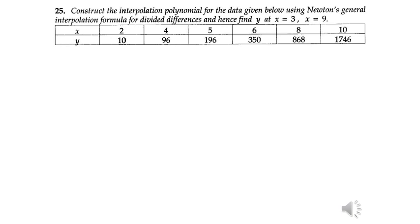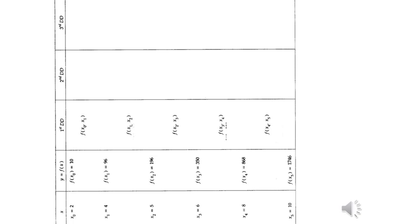Next problem on divided differences. Here they are asking us to construct the interpolation polynomial first, then by using this interpolation polynomial find the value of y at x equal to 3 and x equal to 9. Here is the divided difference table. We have written the x values here and f of x values here, that is y values.